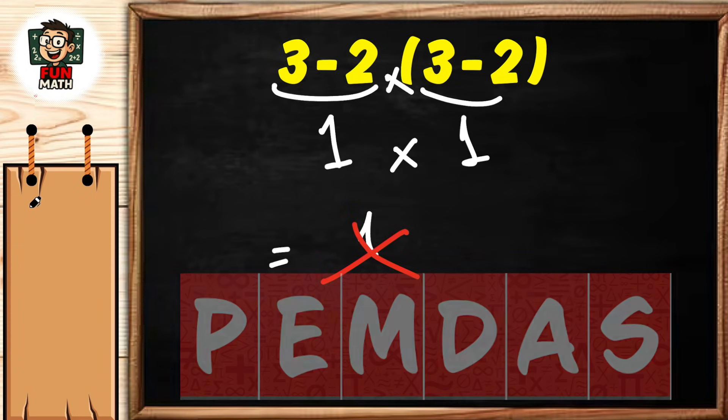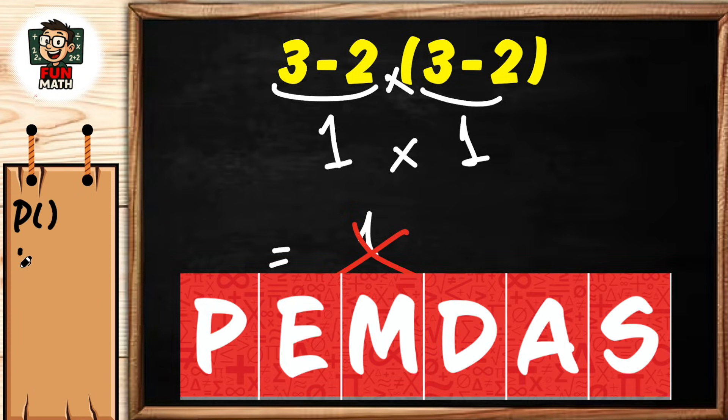P stands for parentheses, E stands for exponent, M stands for multiplication, D stands for division, A stands for addition, S stands for subtraction. We have one more feature: there is no order between multiplication and division.